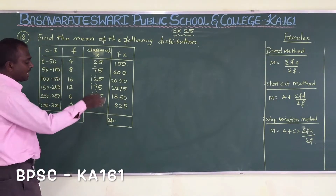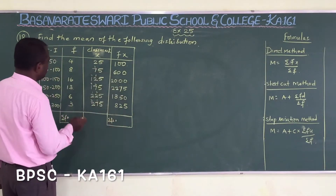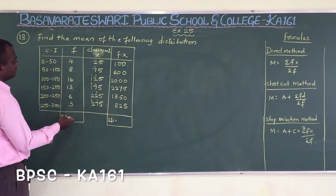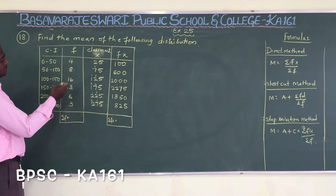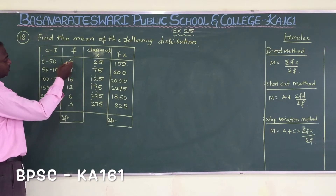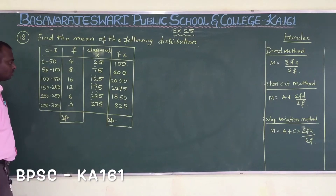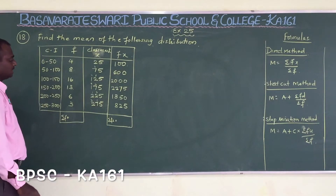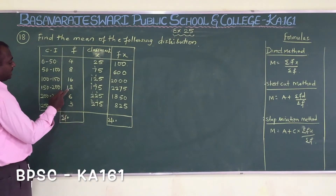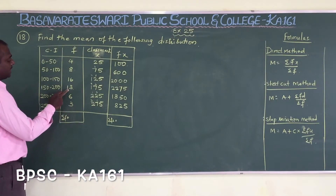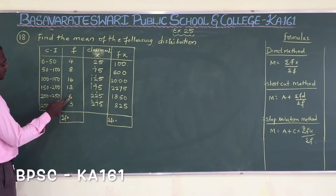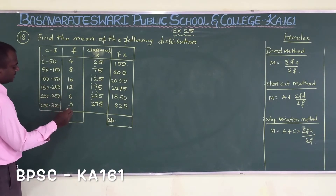Now we have to add the frequencies. 8 + 4 = 12, 16 + 12 = 28, then 28 + 10 = 38, 38 + 3 = 41, 41 + 6 = 47, 47 + 6 gives us a total sigma f of 53.